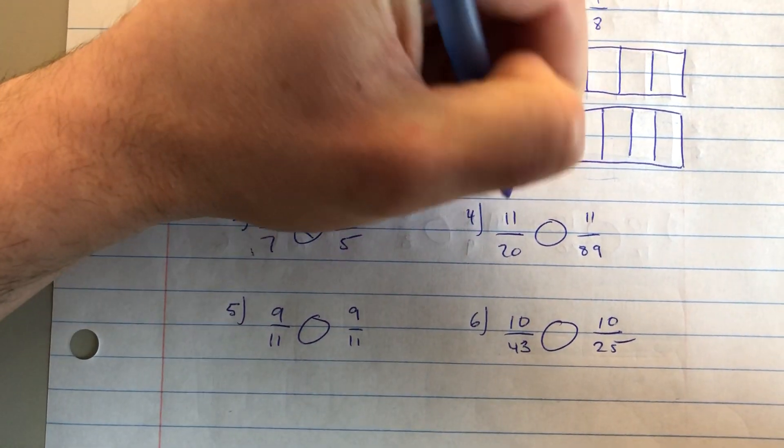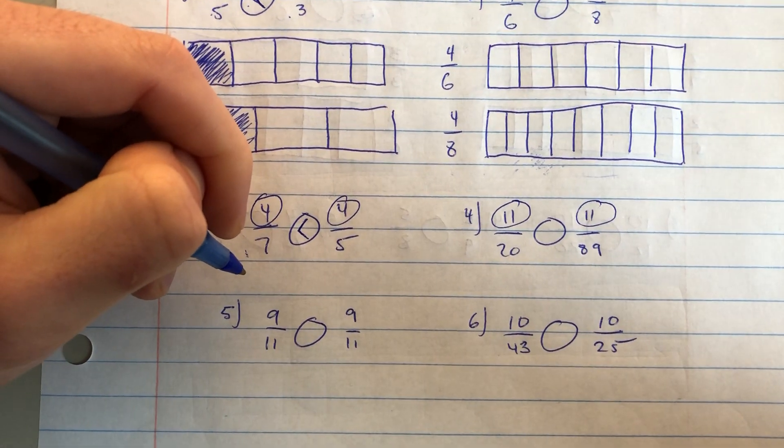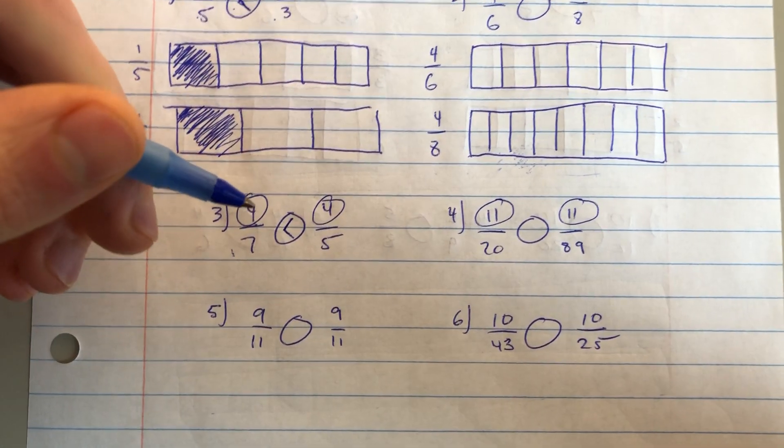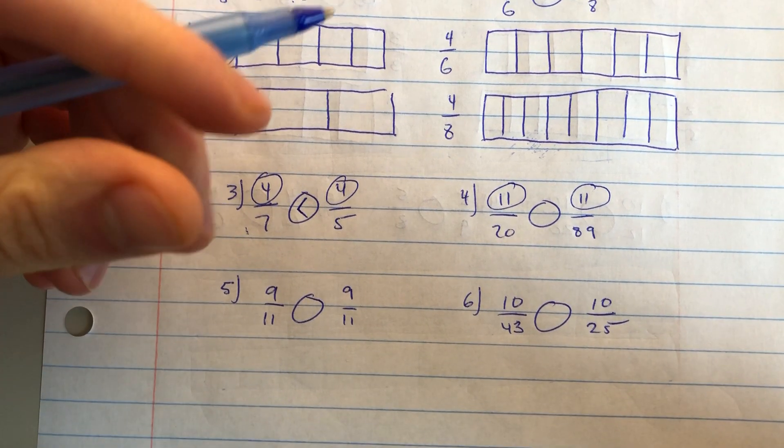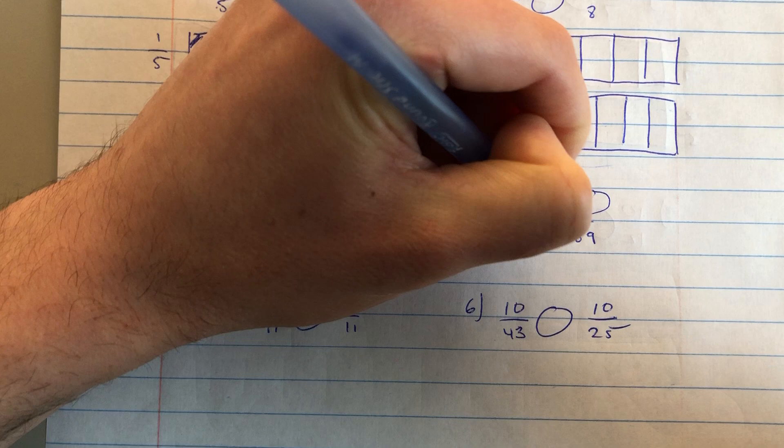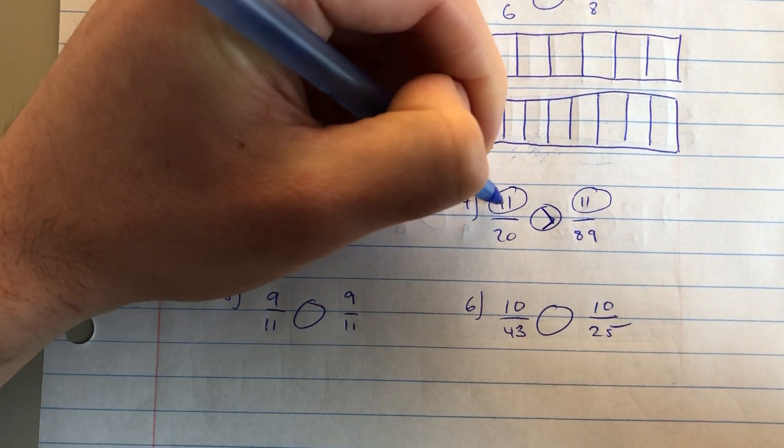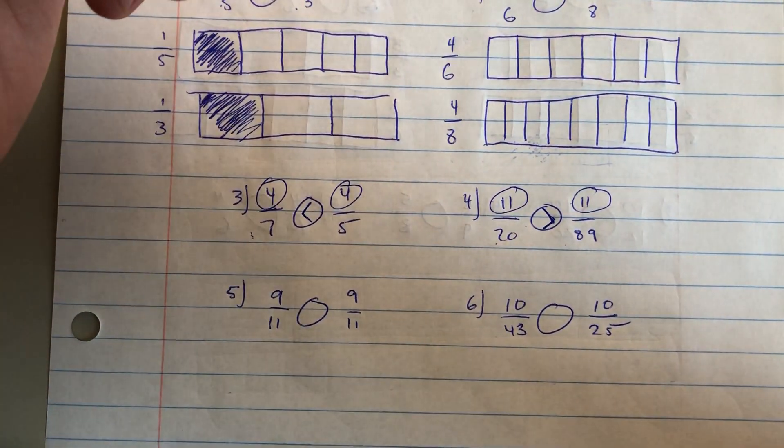I could do the same thing with number four, eleven-twentieths and eleven-eighty-ninths. My numerators are the same, so the bigger the denominator, the smaller the fraction. So eleven-eighty-ninths is my smaller fraction, so I can say eleven-twentieths is greater than eleven-eighty-ninths.